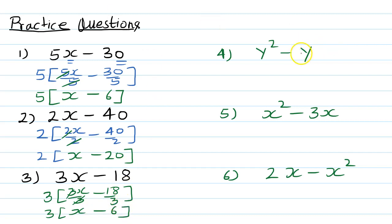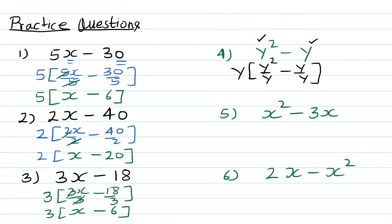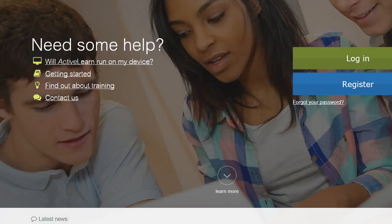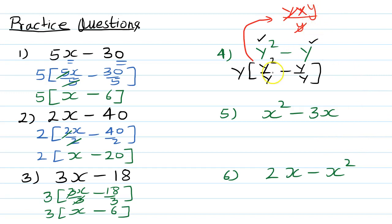Now for y squared minus y: y appears in both terms — y squared has 2 y's and the second term has 1 y — so take 1y outside. y squared divided by y: y squared means y times y, so one y cancels, leaving y. Then y divided by y leaves 1. So the answer is y(y minus 1).